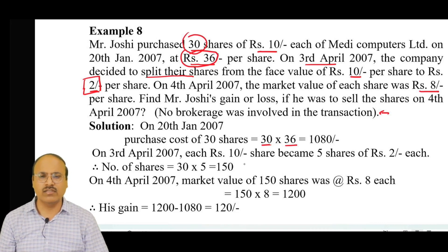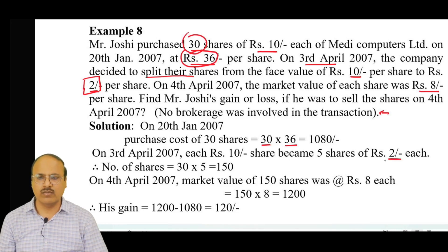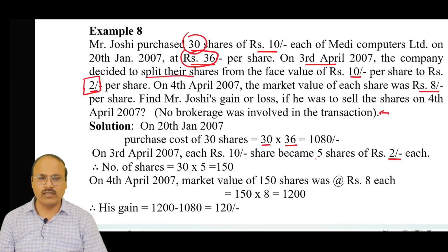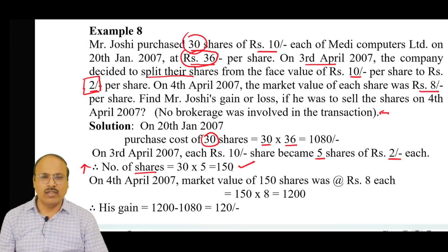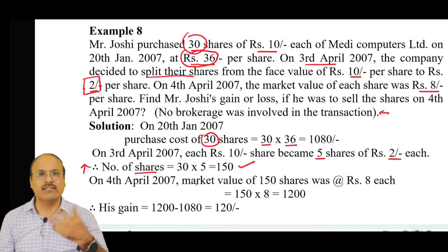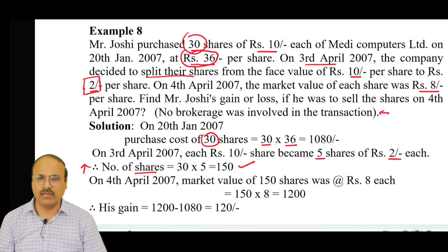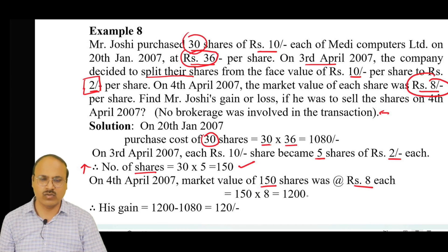On 3rd April, each rupees 10 share was split into a rupees 2 share, so one share becomes equivalent to 5 shares. The person had initially bought 30 shares, and since one share has become 5, the total number of shares increased to 150. On 4th April, the market value became rupees 8. The total value of shares is 150 shares at rupees 8 each, which equals rupees 1,200.